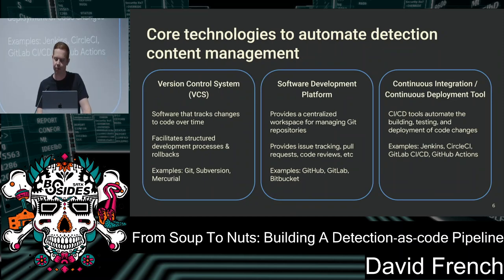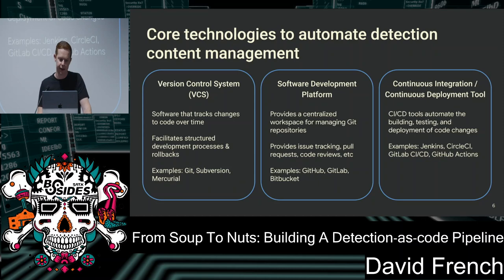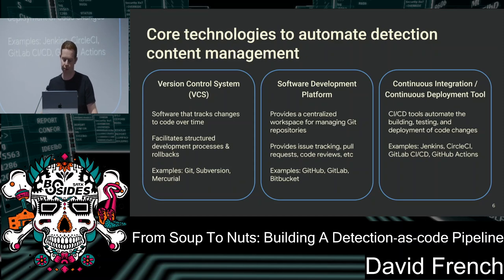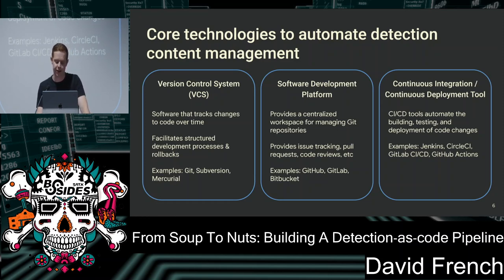Just acknowledging that everyone has varying levels of experience with detection engineering, writing code, and software development tools. Some core technologies to cover before we walk through the example workflow. First, we need a version control system — you've probably heard of Git — which lets us track changes to our code base over time, do rollbacks, and iterate to improve things. We'll also need a software development platform like GitHub or GitLab, which provides a centralized workspace to manage our code, stage changes, and ask peers to review. And we need a CI/CD tool — when the code base changes, it kicks in automated jobs to test and deploy our rules.